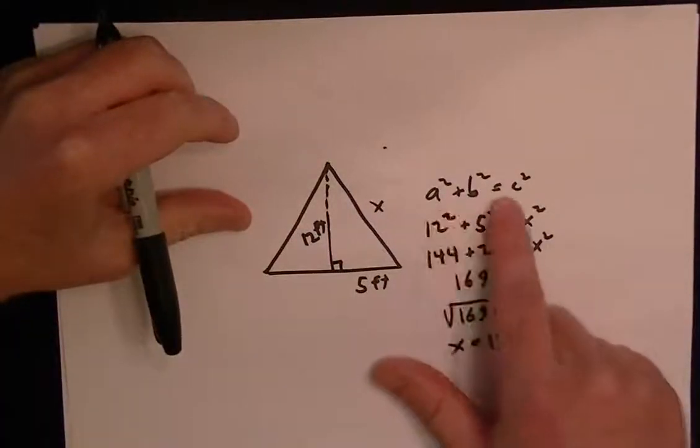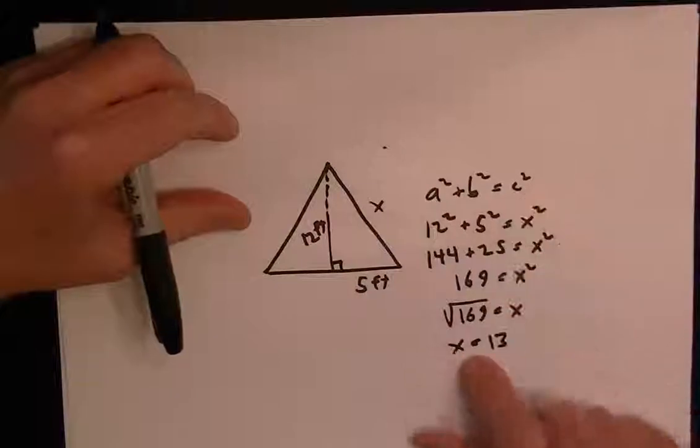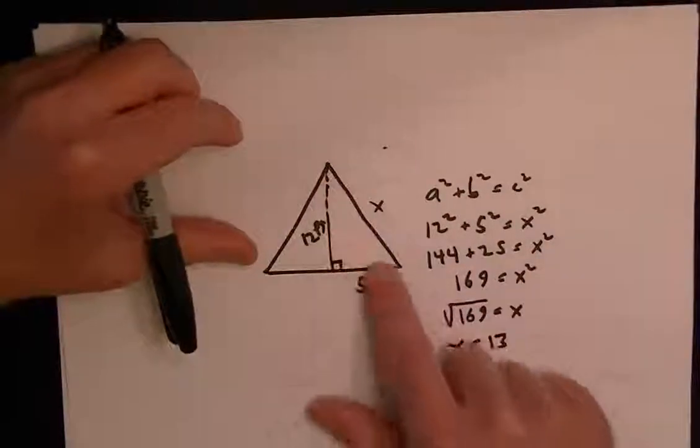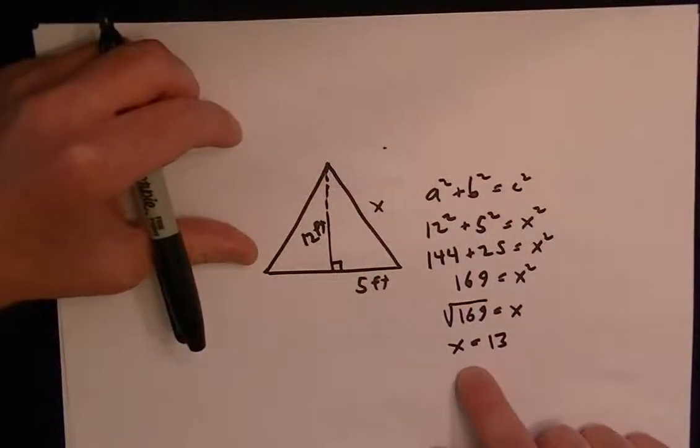This is just the Pythagorean theorem, and you can work it out with the triangle. So you get x equals 13.